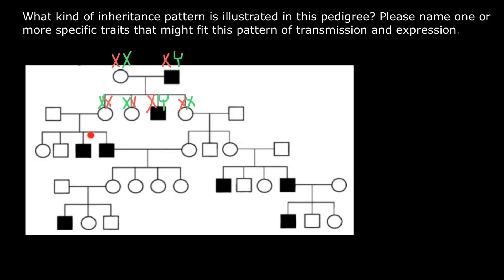In the next generation, these males got the defective X chromosome from the mother's side and the normal Y chromosome from the father's side. So genotype is X-defective Y. Because they have only one X chromosome, which is defective, the phenotype is also going to be affected.